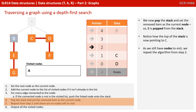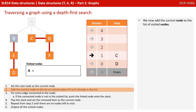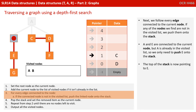We now pop the stack and set the removed item as the current node, so B has popped off the stack. Notice how the top of the stack is now pointing to C. As we still have nodes to visit, we repeat the algorithm from step 2. We add B to the list of visited nodes. A and E are connected to the current node, but A is already in the list, so we only need to push E onto the stack. The top of the stack is now pointing to E.